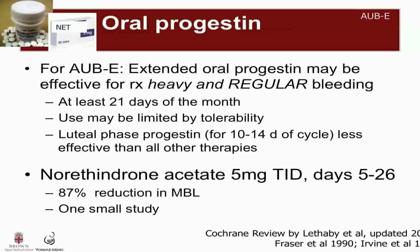Oral progestins are powerful anti-estrogens that block the estrogen effect on the endometrium and achieve withdrawal bleeding. They can be useful for both AUB-E and AUB-O, but the dosing regimens are quite different. For AUB-E, extended oral progestins — given for at least 21 days of the month — may be effective treatment. One study showed that giving norethindrone acetate 5 milligrams TID for days 5 to 26 of the menstrual cycle resulted in an 87 percent reduction in menstrual blood loss. However, their use may be limited by tolerability, with side effects such as breast tenderness, bloating, and headaches. Notably, luteal phase progestins for 10 to 14 days of the cycle are not effective for treating patients with heavy and regular bleeding and have shown to be less effective than all other therapies.